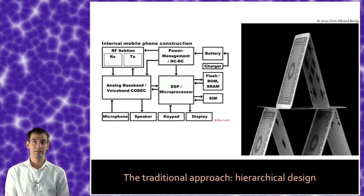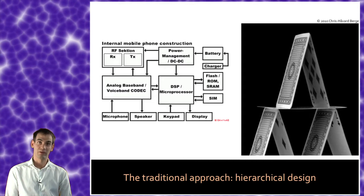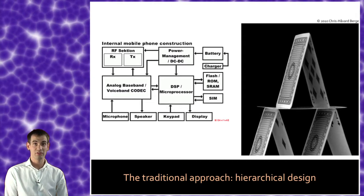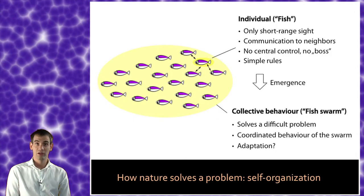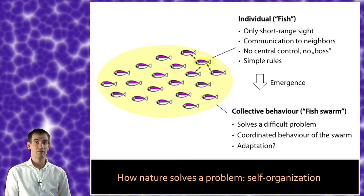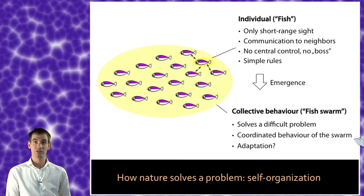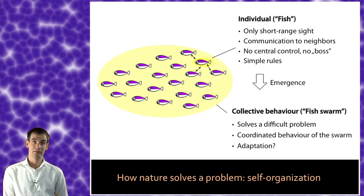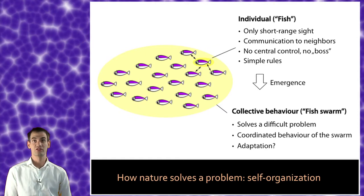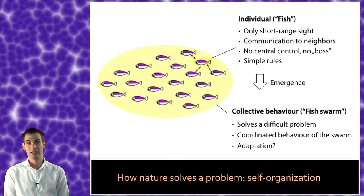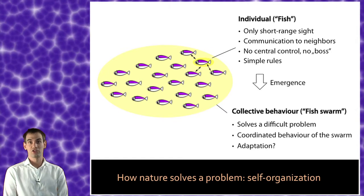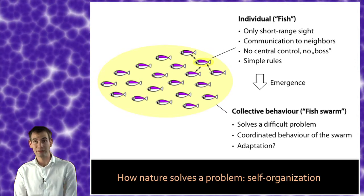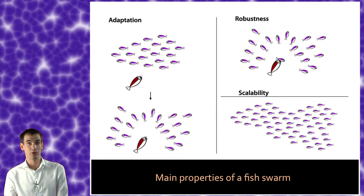We think the idea is to use distributed algorithms, distributed systems like in nature. In nature everything is distributed. Look at a swarm of fish where each fish is simply following very simple rules: to be close to other fish, to stay far away from sharks, and to find food. But if we zoom out we see the swarm of fish as one big intelligent entity, and this system shows very interesting and advantageous properties like scalability, adaptivity, and robustness.